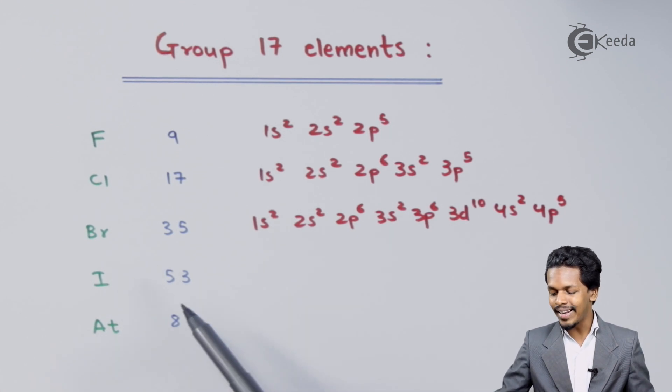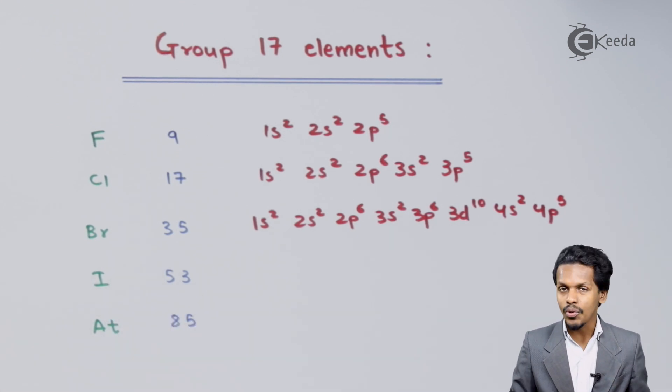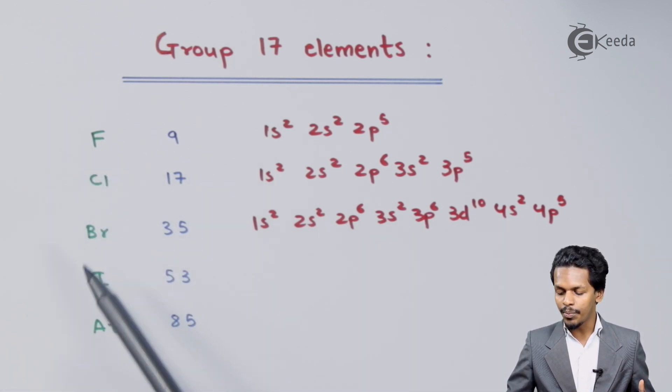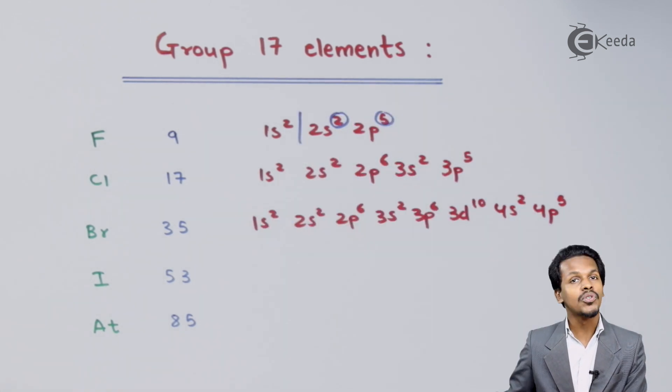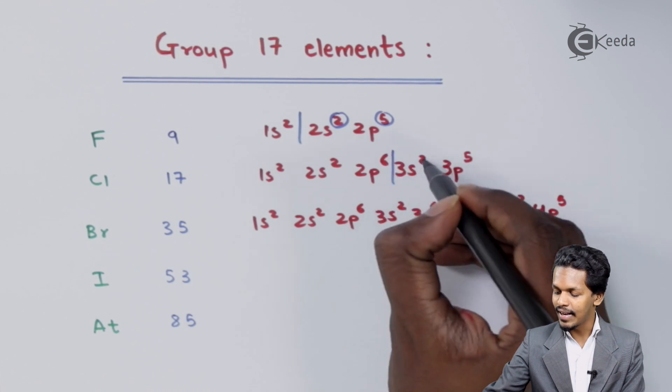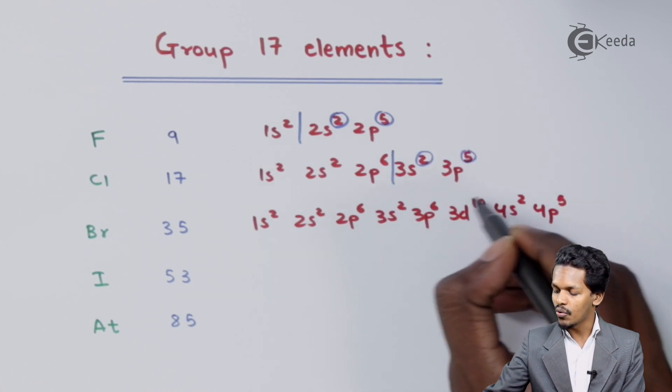Similarly, I could write the electronic configuration for the next two also. But if you observe each of these elements—Fluorine, Chlorine, Bromine, Iodine, and Astatine—they basically have 7 electrons in their outermost shell.